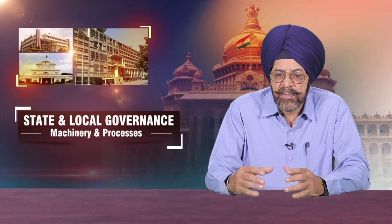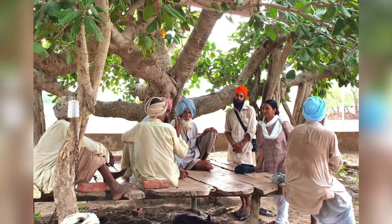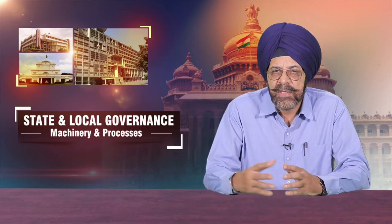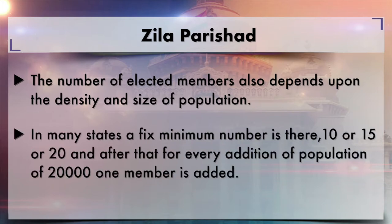There is even a system of reservation for backward classes if their population exceeds a particular percentage. Like in Punjab, the act says that if the population of backward classes exceeds 20%, then one seat may be reserved for backward classes. The number of elected members also depends upon the density and size of the population — a fixed minimum number is set, say 10, 15, or 20, and after that for every addition of 20,000 in population, one member is added.